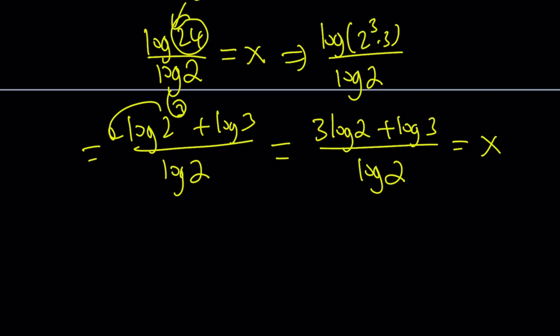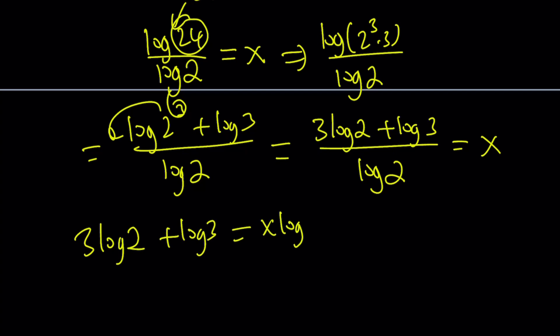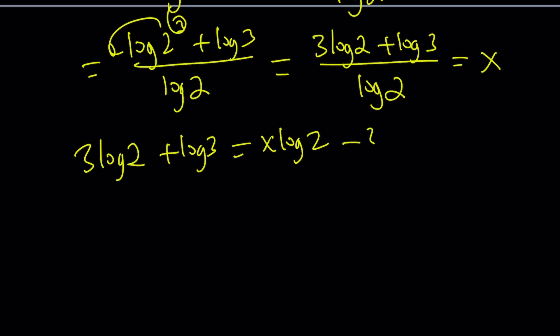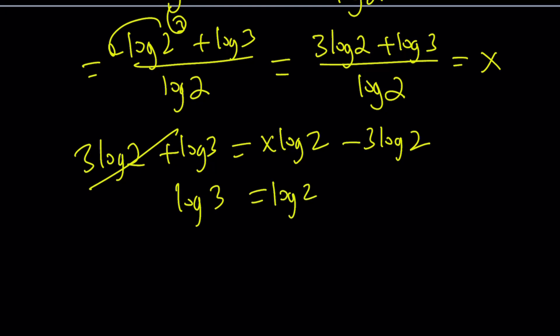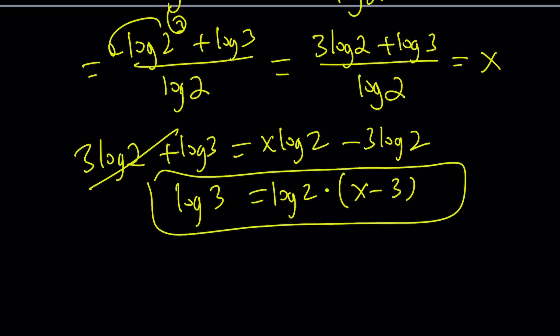Let's solve for log 3, since that's easy. By cross multiplication: 3 log 2 plus log 3 equals x log 2. Subtracting 3 log 2 from both sides and factoring out log 2, we get log 3 equals (x minus 3) times log 2.